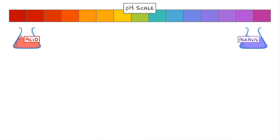In today's video we're going to look at the pH scale and see what acids and alkalis are. pH is really just a measure of how acidic or alkaline a solution is, and it's measured on a scale from 0 to 14.